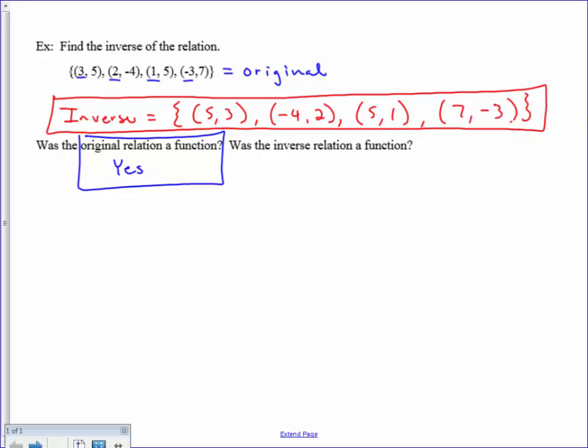Is the inverse relation a function? We want to go back and look at the x values we have here. We see that there are two x values of 5, and they're assigned to different y values. 5 is assigned to 3, and 5 is assigned to 1. So no, the inverse relation is not a function.